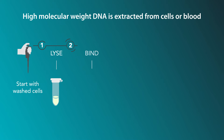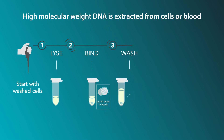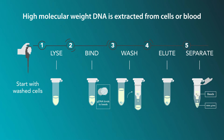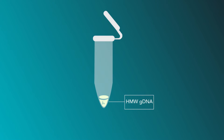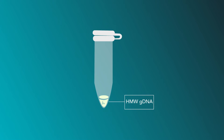First, high molecular weight DNA is extracted from cells or a blood sample for the preparation of ideal DNA lengths ranging from 50 to 500 kilobases. Then, using the Omex sample prep kit, the long DNA molecules are prepared for electronic genome mapping.